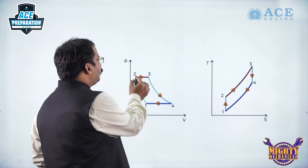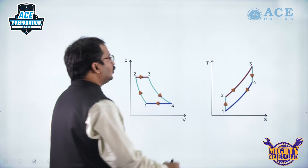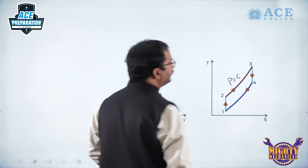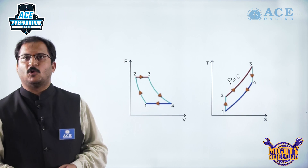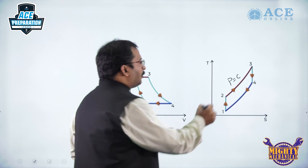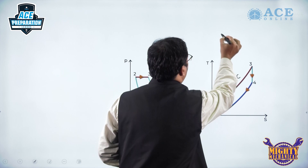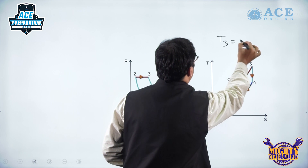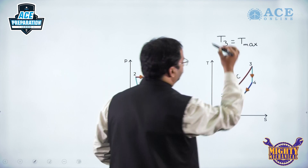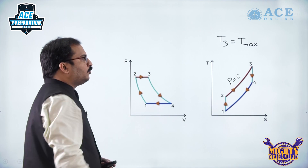Process 2 to 3 is constant pressure heat addition. During heat addition, the temperature increases and at the same time entropy also increases. Here the maximum temperature is attained, that is T3. So T3 is taken as T_max, and maximum pressure is P2 equal to P3.